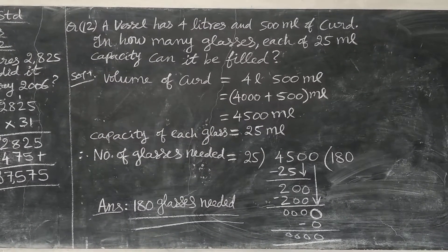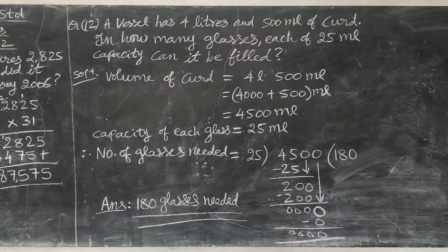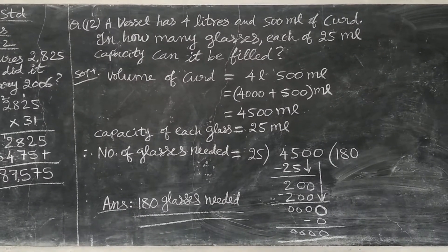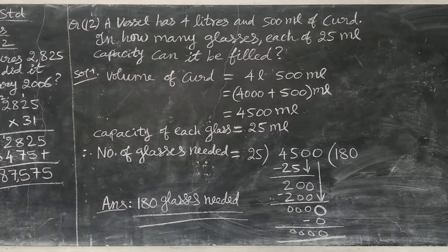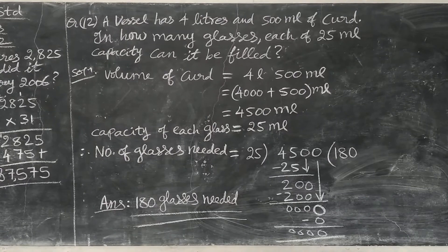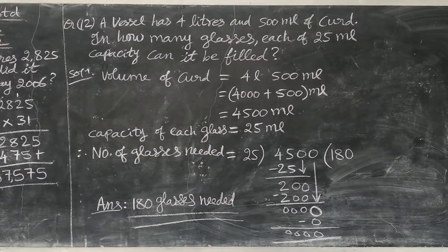4 liters and 500 milliliters. That you have to write. Volume of curd is equal to 4 liter, 500 milliliters. Now you have to convert liter into milliliters. 4 liter is there now. You have to convert it into milliliters.